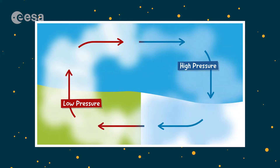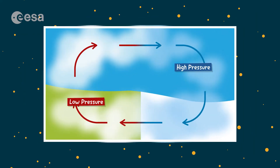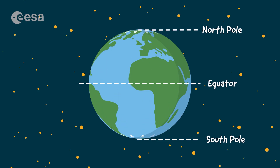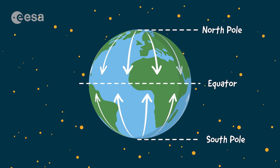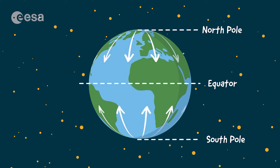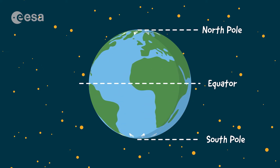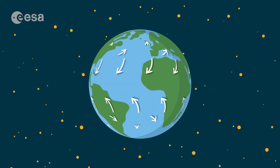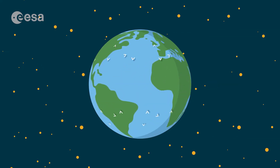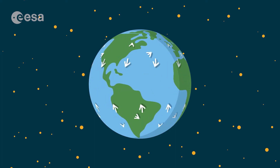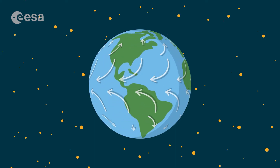Air always moves from an area of high pressure to an area of low pressure. For example, on the Earth's surface from the cold poles towards the hot equator — that's when we have wind. But on its way, the air gets twisted by the rotation of the Earth, so wind can come from all directions.